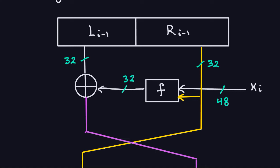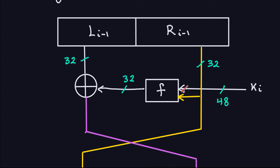One of the things that is important here, if you remember from the last video, is the F function has two inputs. One of the inputs is the right-hand side of the previous block, which goes into the F function, and also the sub-key Ki, which is 48 bits. The right-hand side is 32 bits, because the whole block is 64 bits divided into 32 bits on the left and 32 bits on the right. So the F function takes these two inputs — ri-1, the 32-bit right-hand side from the i-th round, and the Ki sub-key — and its output has to be 32 bits.